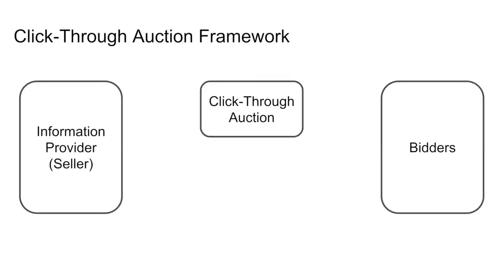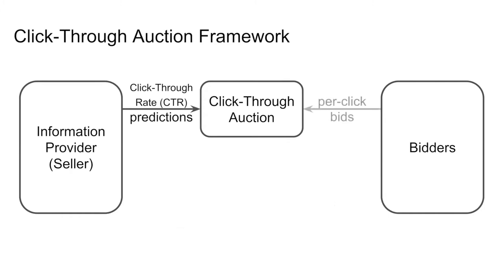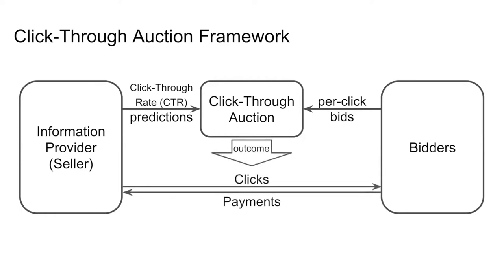We first introduce the framework of click-through auctions. In general, there are three parties in the game: the information provider, or the seller, who has access to the data for training ML models to predict click-through rates and submit to the auction; the bidder, who submits per-click bids to the auction; and the auction, that takes predicted CTRs and bids as input and determines the outcome. The outcome of the auction includes whether each bidder will receive any clicks — note that clicks are randomized events — and how much the winner needs to pay once a click really happens.